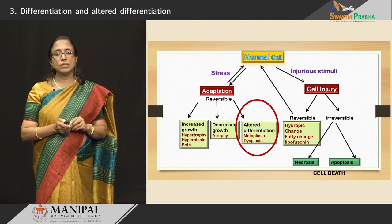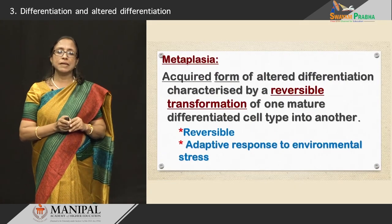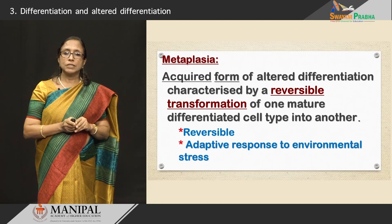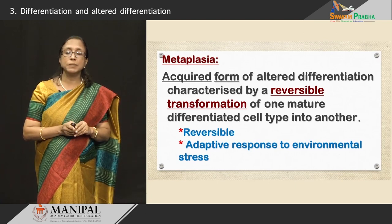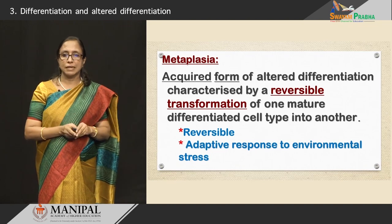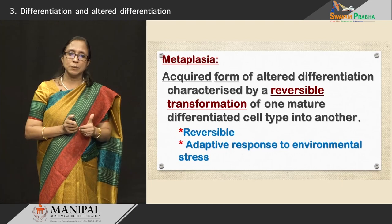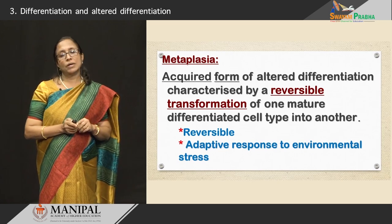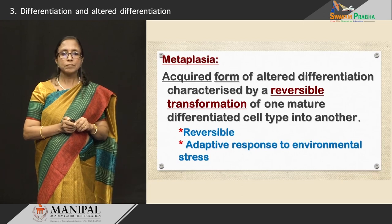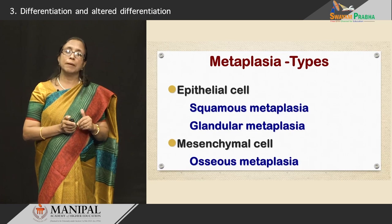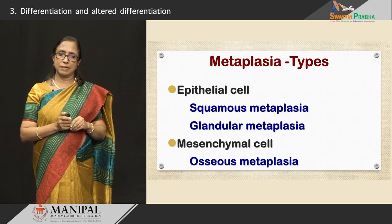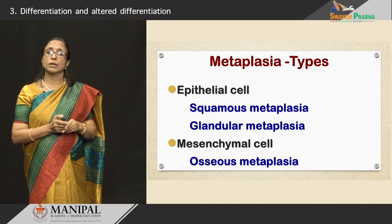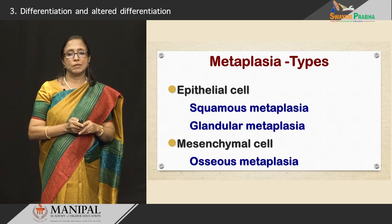What is metaplasia? Metaplasia is an acquired form of altered differentiation characterized by reversible transformation of one mature differentiated cell type to another differentiated cell type. It is reversible, and it usually occurs as an adaptive response to environmental stress. The types of metaplasia are epithelial metaplasia and mesenchymal metaplasia. Epithelial metaplasia can be squamous metaplasia or glandular metaplasia, and mesenchymal or connective tissue metaplasia — an example is osseous metaplasia. The most common is squamous metaplasia.